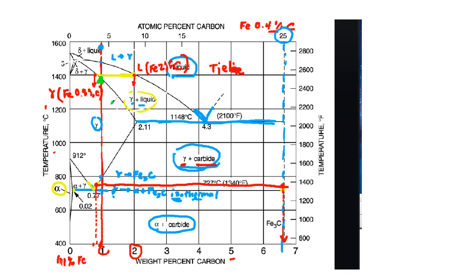This is called the lever rule, and let's go through an example at this temperature. So we know that we have gamma plus liquid as the two phases, and we know that the endpoints of the tie line tell us the composition of the phases that we have.